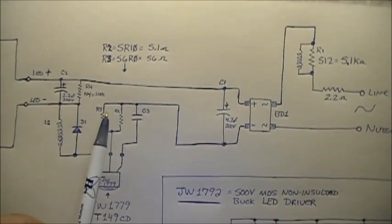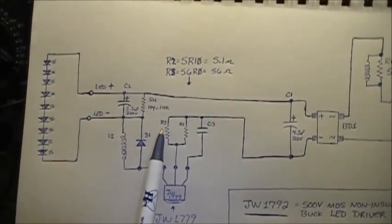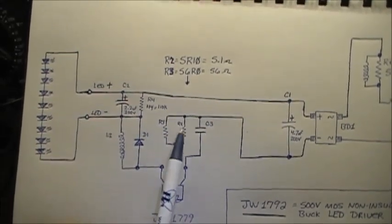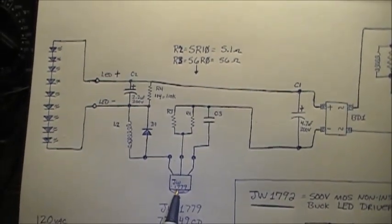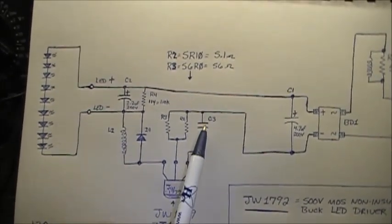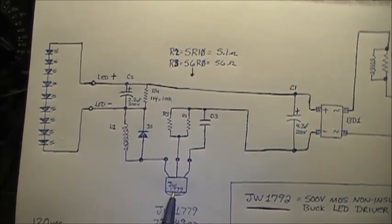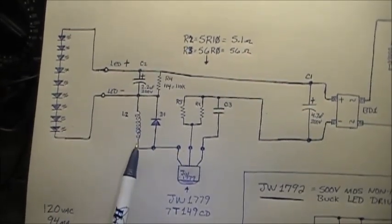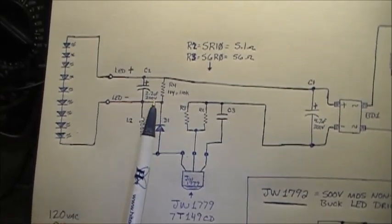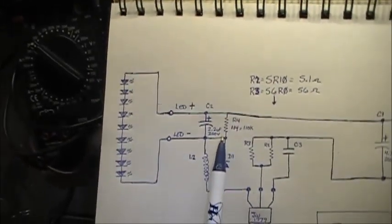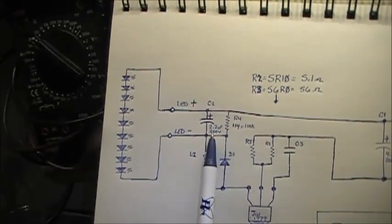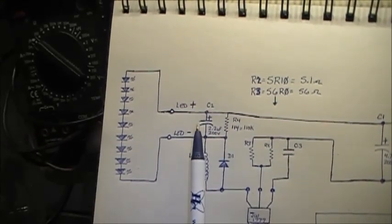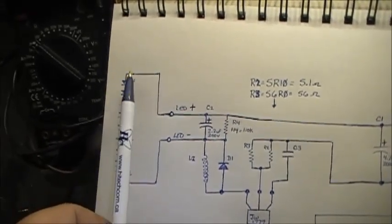So then you have DC output, which is being filtered by a 4.7 microfarad electrolytic at 200 volts. And then that goes across through R3, which is a 56 ohm resistor. R2, which is a 5.1 ohm resistor. Two of these are parallel, which goes to a JW1779. Also goes through a little ceramic capacitor, also to the JW1779.